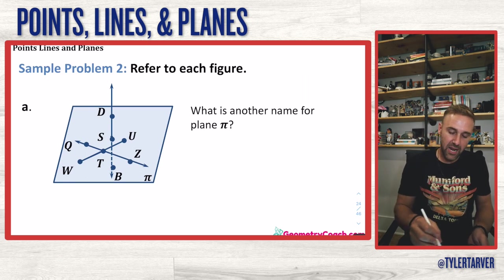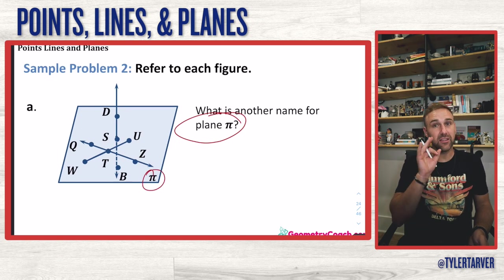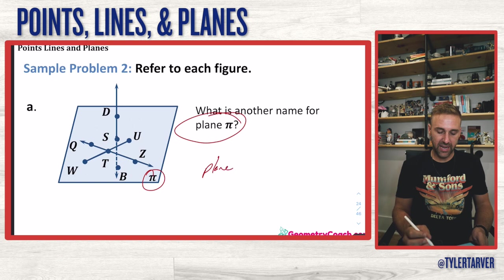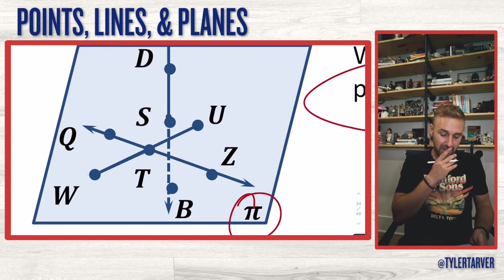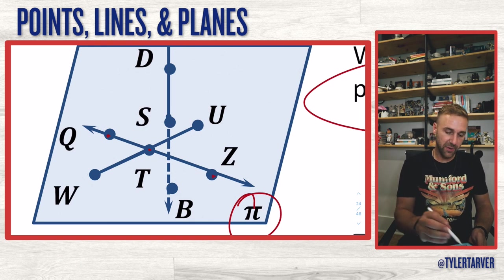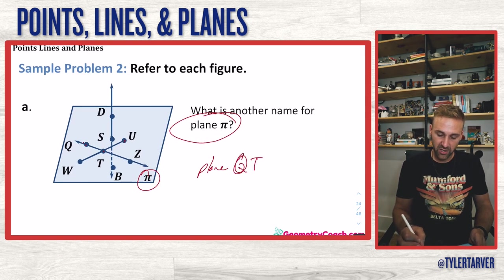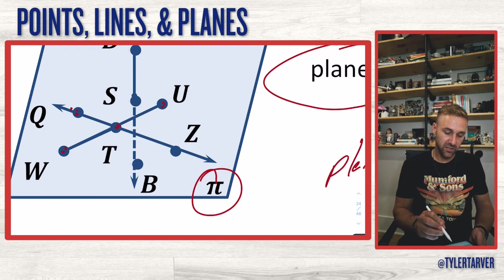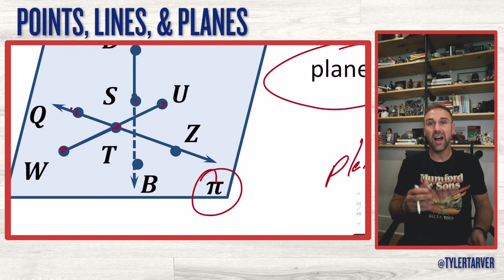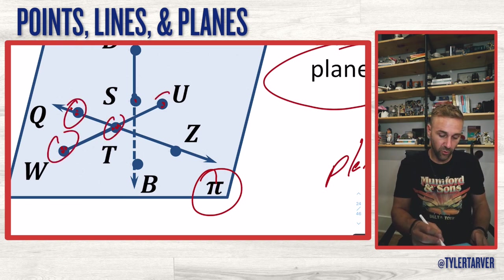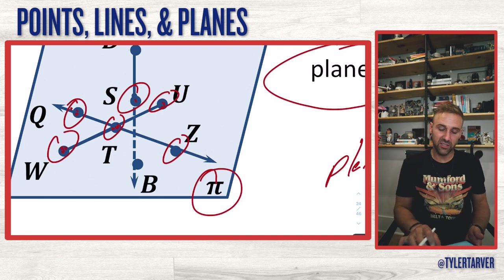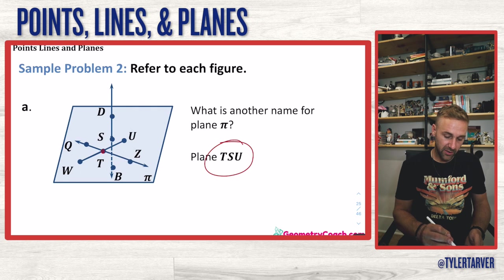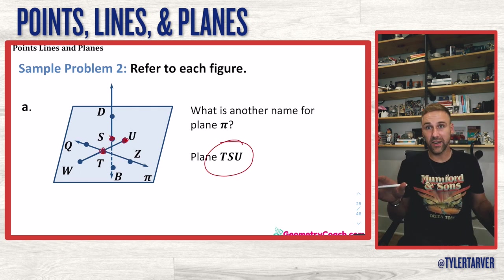What is another name for plane pi? We just need three non-collinear points on the plane. I couldn't say Q, T, Z because those are on the same line. So let's pick Q, T, and U — plane QTU. There are multiple options since we have six points on this plane and only need three. The answer shows plane TSU, which is also correct.